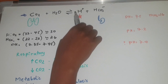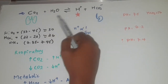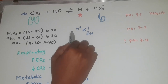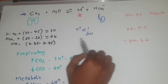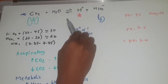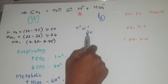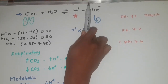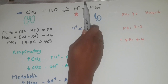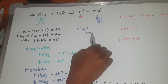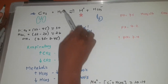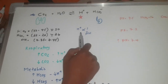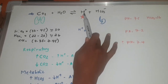If hydrogen is a key product, we have to use it — that's why we use it to maintain balance.